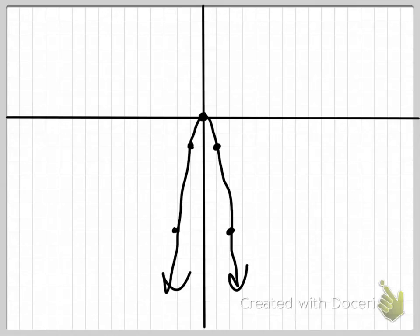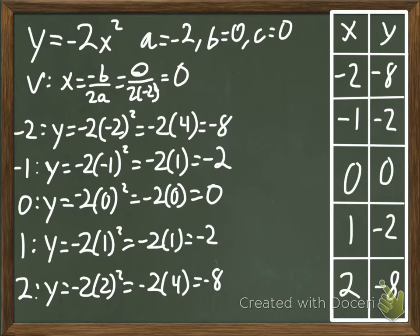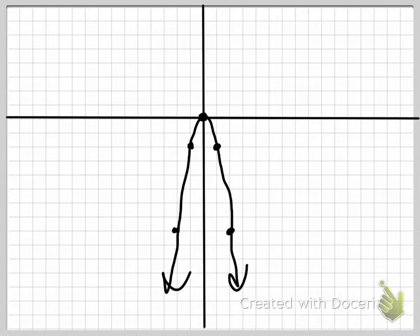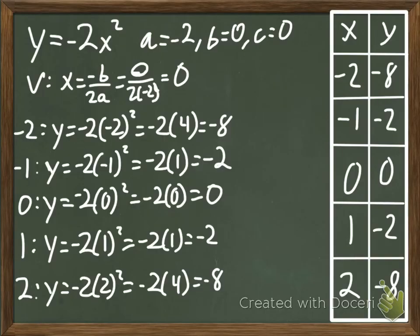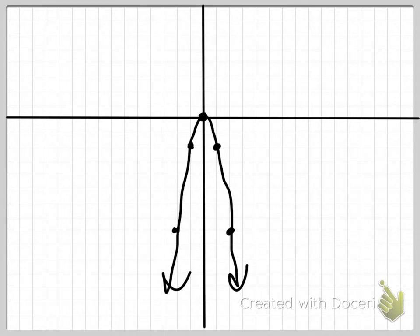Looking at our graph, there are a couple things to notice. First, it's a little bit skinnier than our original graph. The difference is our a is an integer other than 1. We can conclude that if our a is bigger than 1, or a negative integer smaller than negative 1, your graph is going to be skinny. You'll also notice that our graph is pointing down - that has to do with the fact that our a is negative. So if your a is negative, your graph opens down - it's going to look like a frown. And if your a is positive, it's going to open up like a smile.